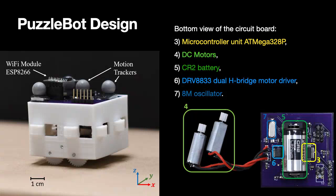Here we show the bottom view of the circuit board. We can see we have a microcontroller unit, two DC motors that are controlled by a dual H-bridge motor driver, a CR2 battery of 3.3 volts, and an oscillator that sends signal to the microcontroller unit.